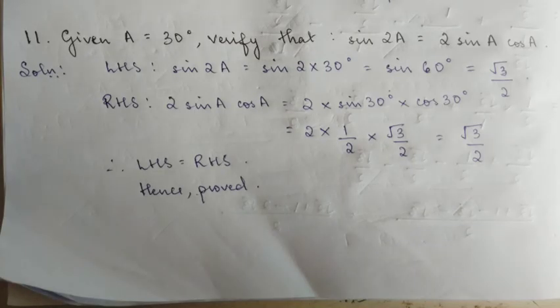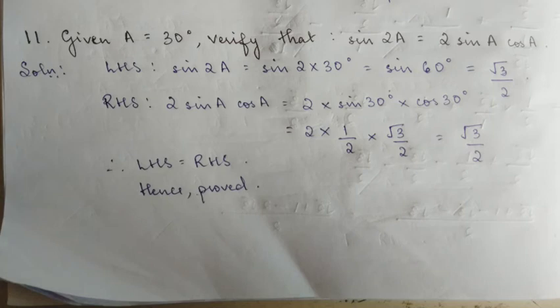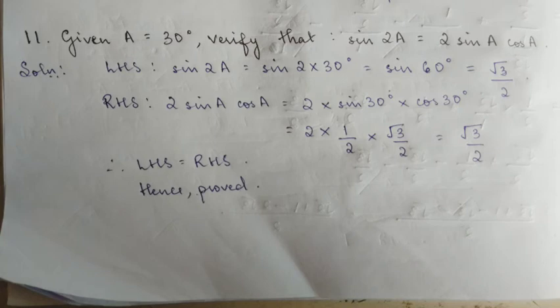Now number 11. We have to verify that sin2A is equal to 2sinA cosA. So you will solve the left hand side first: LHS = sin2A. A equals 30 degrees, so 2A equals 2 into 30 equals 60. So sin60 equals root 3 by 2.